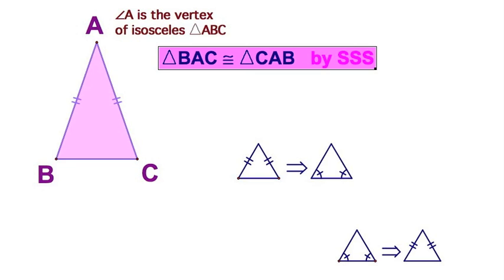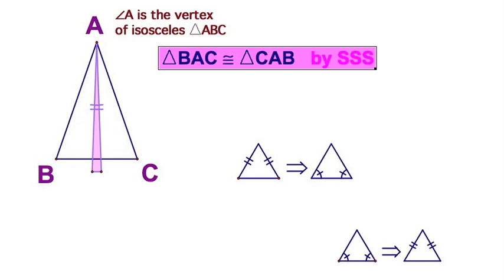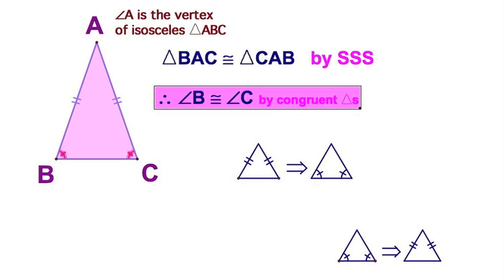So triangle BAC is congruent to CAB. And you can see that by side, side, side. Obviously, the third side would be BC is congruent to itself by the reflexive property. So you've got side, side, side there. Then by corresponding parts of congruent triangles, the two base angles are congruent. We've proven this theorem, that quick.